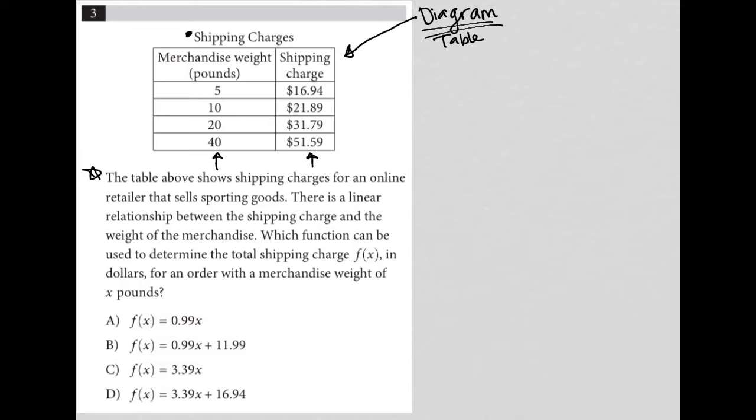So the question goes on to say here, the table above shows shipping charges for an online retailer that sells sporting goods. There is a linear relationship between the shipping charge and the weight of the merchandise. Okay, so anytime I see this word linear on the SAT,